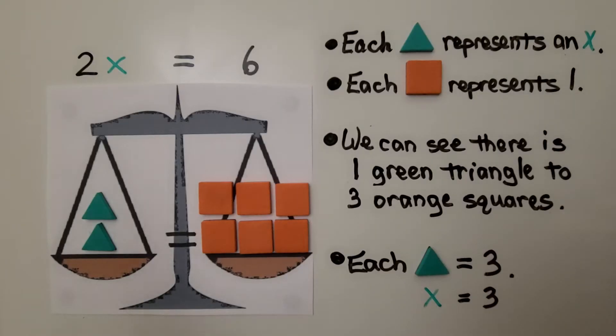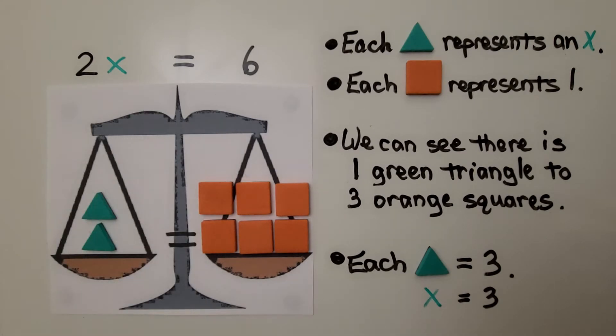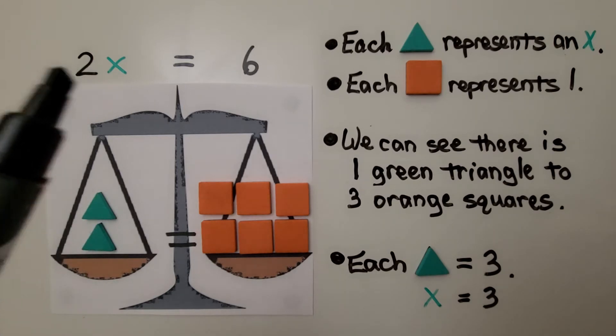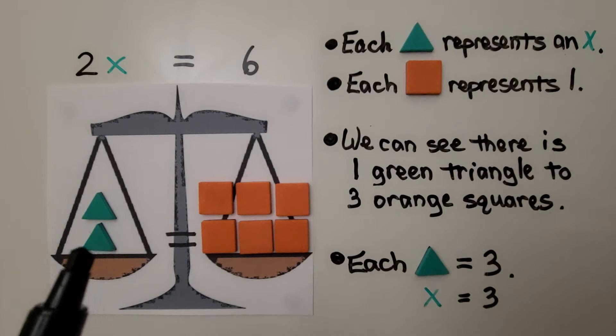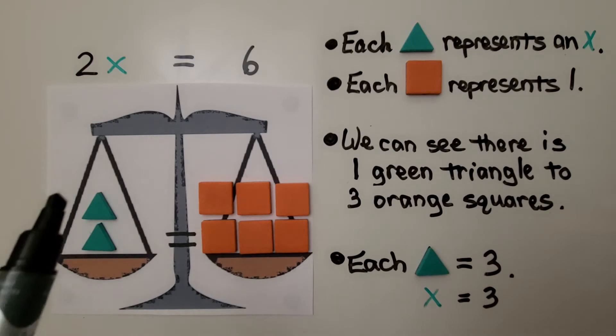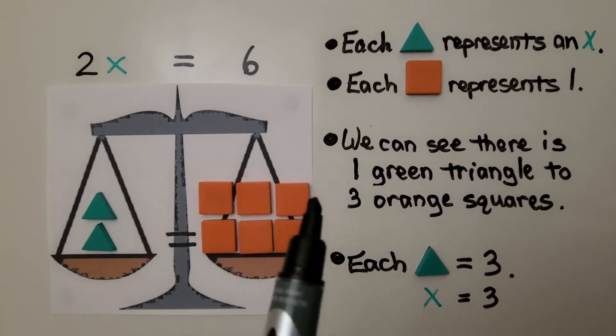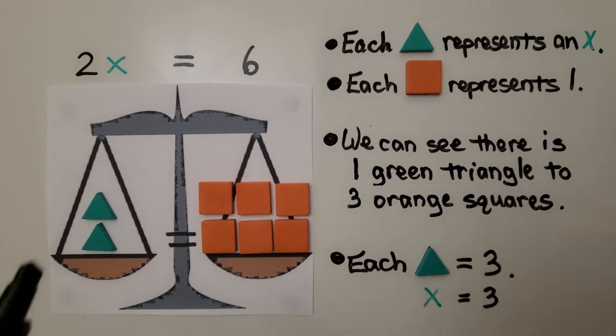Our equation is 2x equals 6. Our balanced scale has two triangles. Each triangle represents an x. We have two of them, so there's an x here and an x there. And each square represents one, so we have six squares. And we can see there is one green triangle to three orange squares. That means each triangle is equal to three.